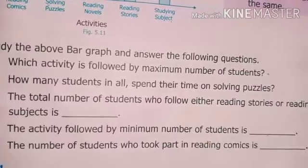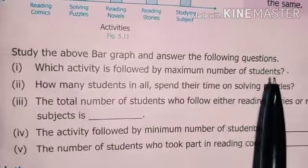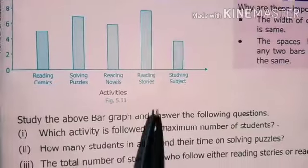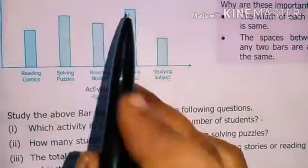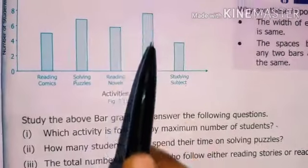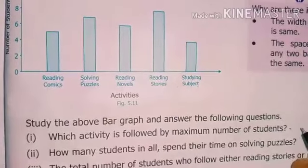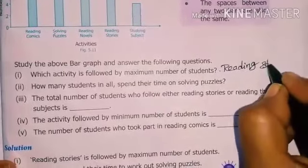Question one: which activity is followed by the maximum number of students? We can easily identify this from the bar graph — the tallest bar corresponds to reading stories. So the answer is: reading stories is the activity followed by the maximum number of students.